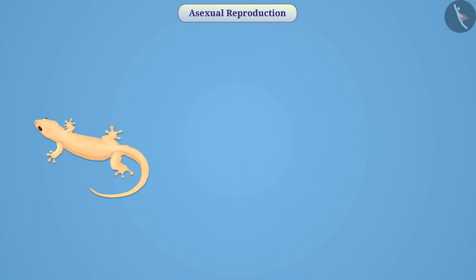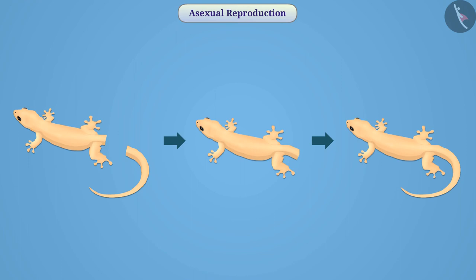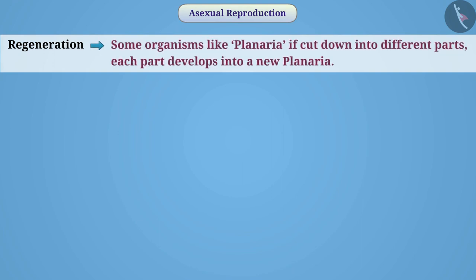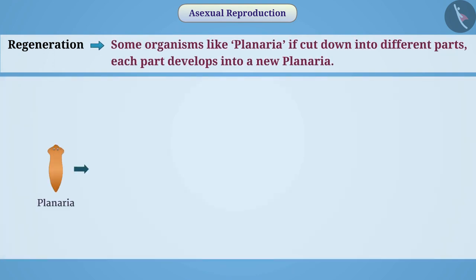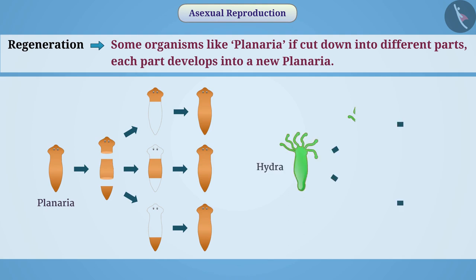You must have seen that lizards separate their tail from the body under adverse circumstances, and later the lizard regenerates its tail again. Similarly, in the method of regeneration, if some organisms like Planaria are cut into different parts, each part develops into a new Planaria. This method of reproduction can also be seen in Hydra.